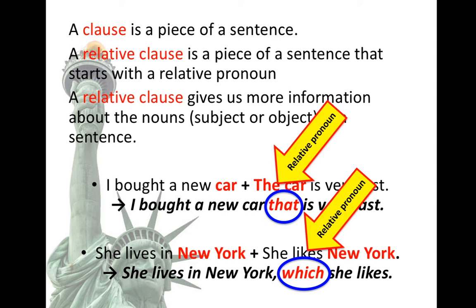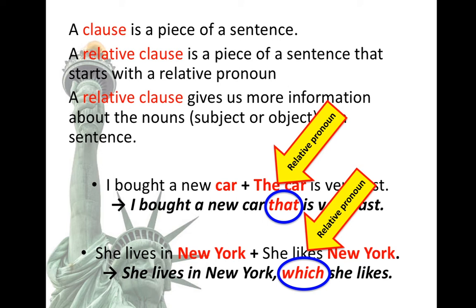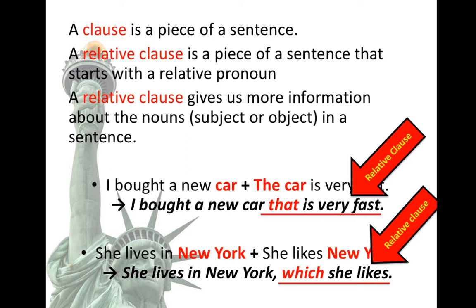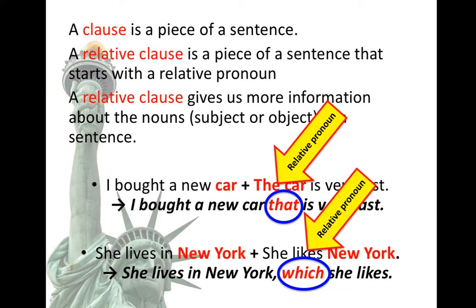So 'that' is the relative pronoun in the first example, and 'which' is the relative pronoun in the second example. Remember, the relative clause is the piece of a sentence that starts with a relative pronoun. 'That' and 'which' are the relative pronouns in these two examples.